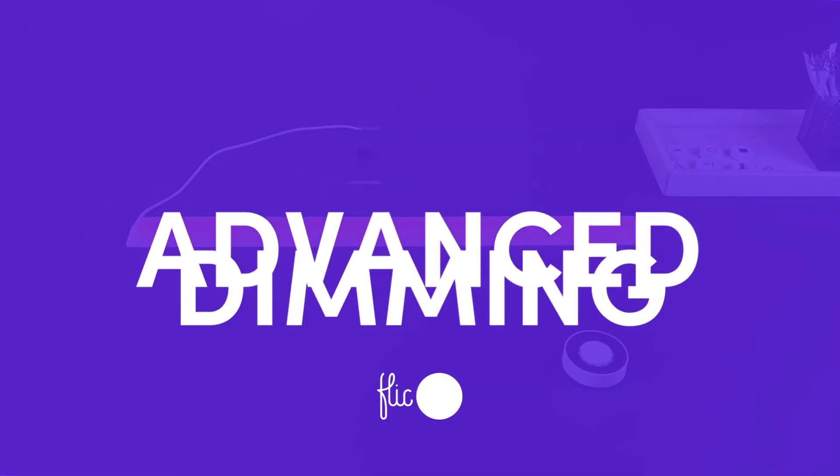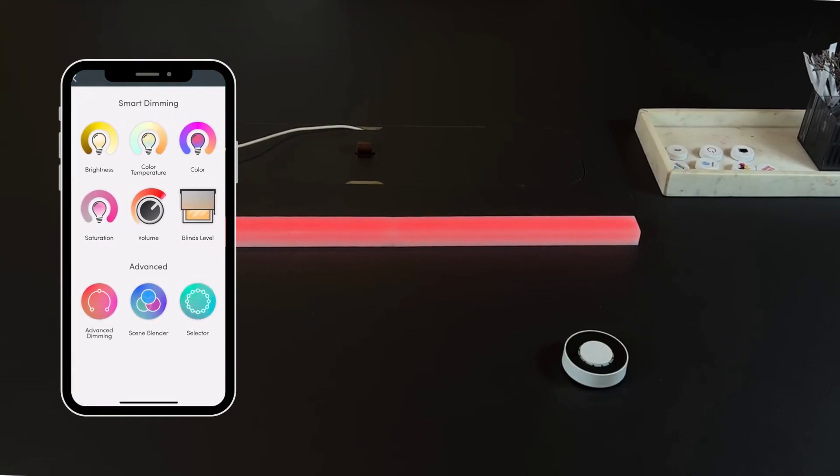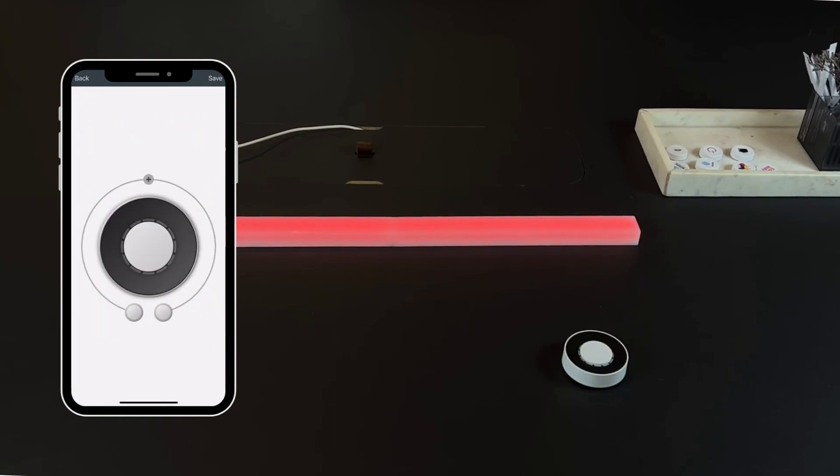To control your LIFX Lights using the Advanced Dimming option, however, select the trigger of your choice and then choose Advanced Dimming. On the Control panel, you'll find trigger points that correspond to different dimming percentages.